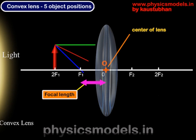Let's take an object at a simple position 2F1. We draw three rays. The green ray parallel to the principal axis. It will refract, bend and pass through the focal point F2. The red ray which passes through the center of the lens will not change its direction and will go the way it came.